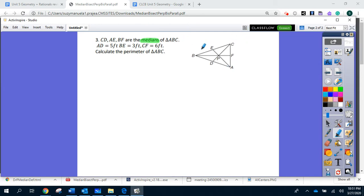We have a triangle ABC and they are given three medians. All these segments CD, AE and BF are the medians.